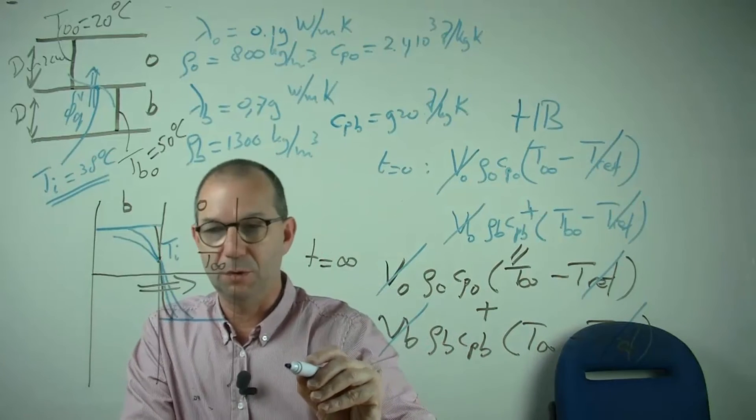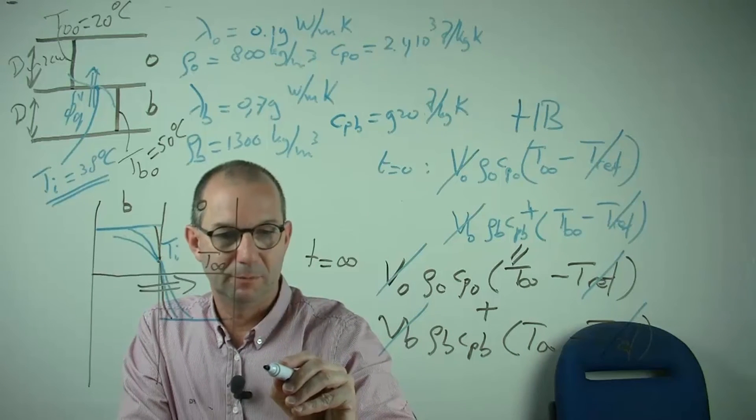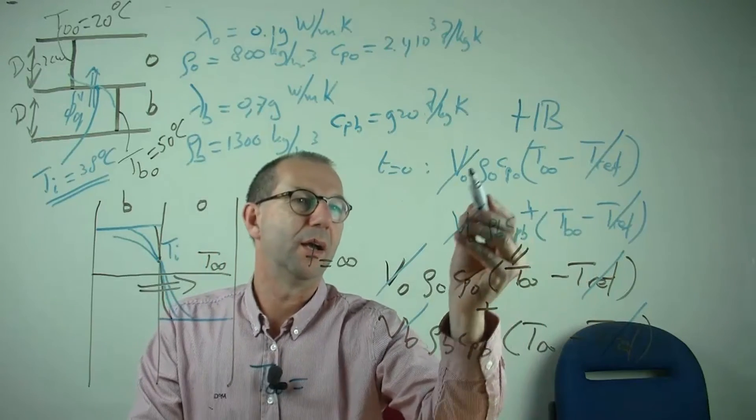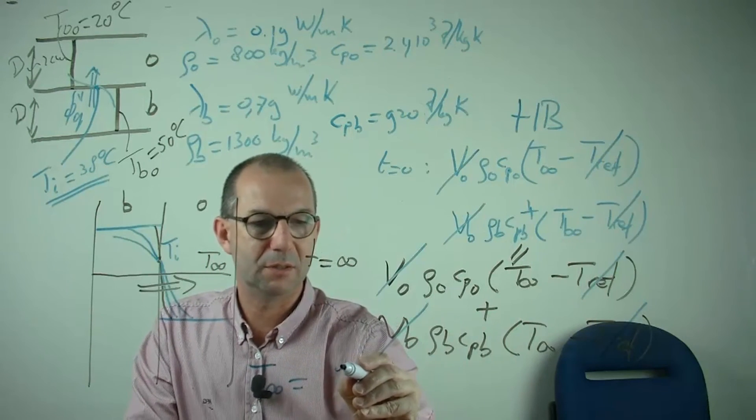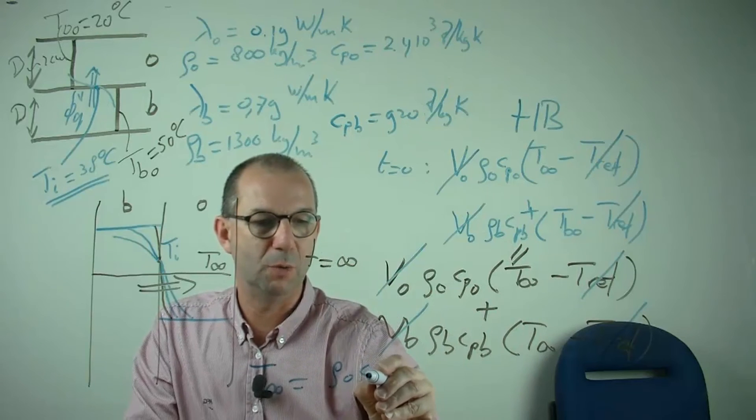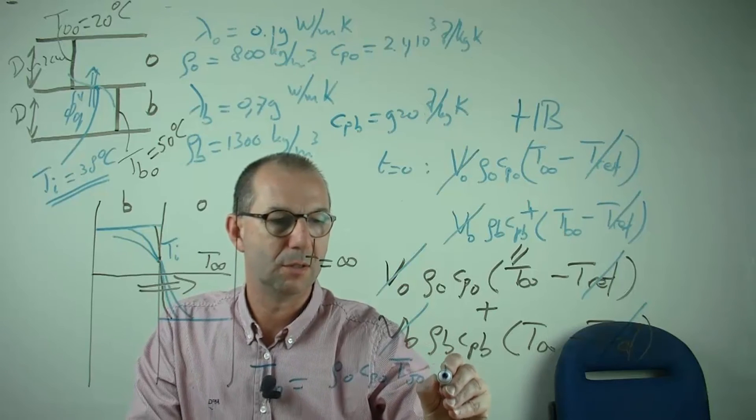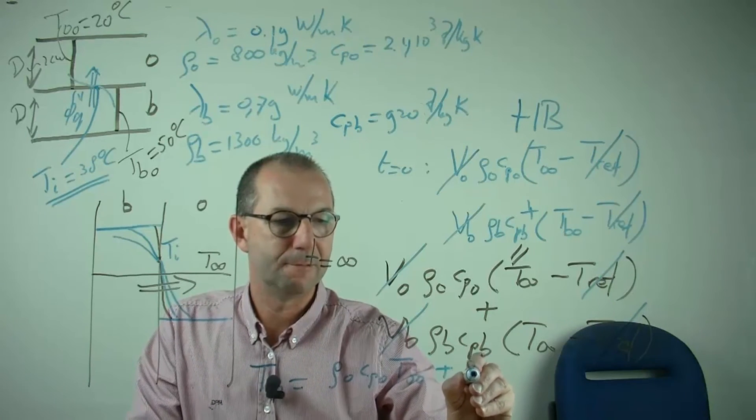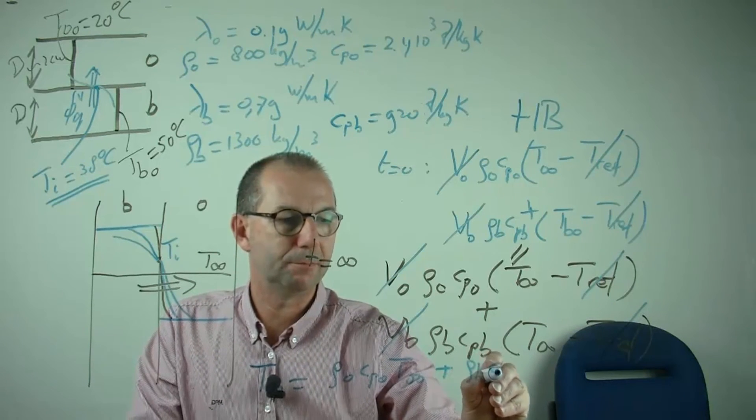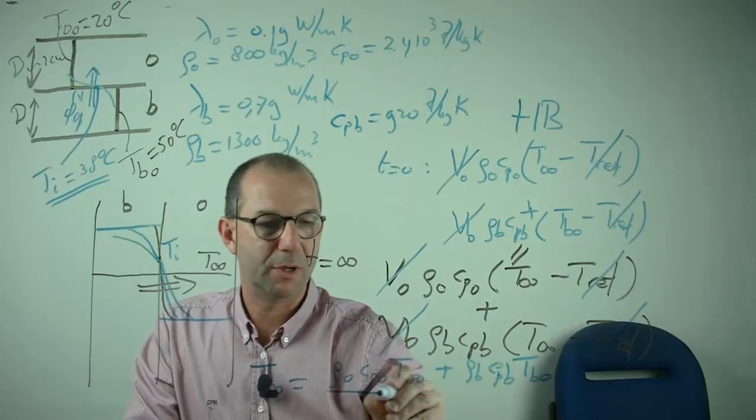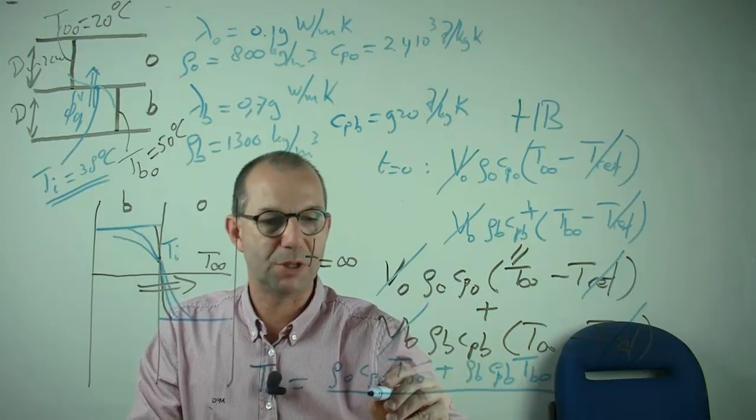If I now try and compute what the final temperature will be, the T-Inf, I have here still the temperatures of each of the two and their respective rho cp. I need to divide that by these two summed up.